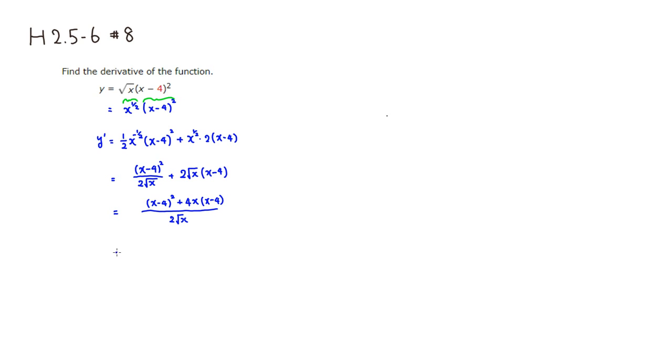Then, since we have a common factor, you can see x minus 4 is here. And there are actually two of them. So I'm going to pull out quantity x minus 4. Then, what's left is x minus 4 plus 4x. So I'm going to write it as 5x minus 4. Then you have a 2 square root of x.